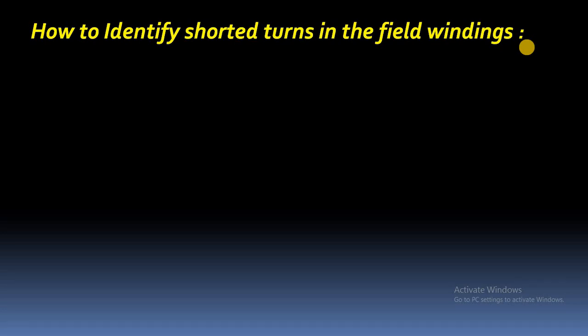In this video we will see how to identify the shorted turns in the field winding using the online technique — the real-time monitoring technique. In the previous video we discussed about the pole drop test, which is an offline method to identify the shorted turns in the field winding. Before going to the online technique, let us briefly discuss how these field shorted turns exist.